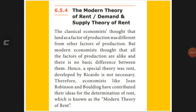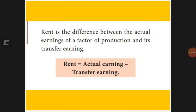Next is the modern theory of rent, also called the demand-supply theory of rent. Modern economists such as Robinson and Boulding believed all factors of production are the same, so Ricardo's rent theory is unnecessary. According to them, rent is the difference between actual earning and transfer earning. Transfer earning means the minimum payment that has to be given to a particular factor of production to retain its present use.